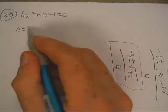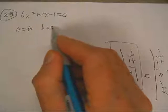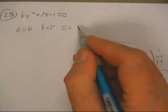Okay, here we go on this one. a is 6, b is 5, c is negative 1.